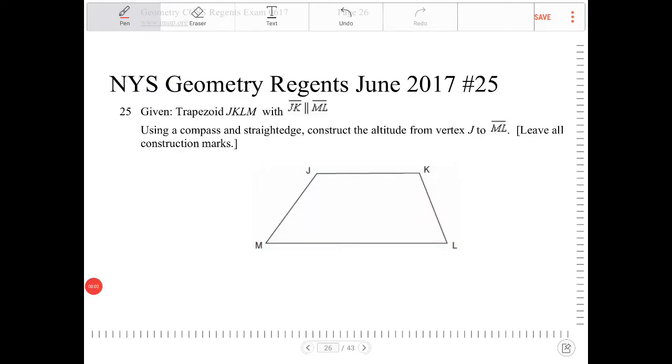Given trapezoid JKLM with JK parallel to ML, using a compass and straight edge, construct the altitude from vertex J down to ML.